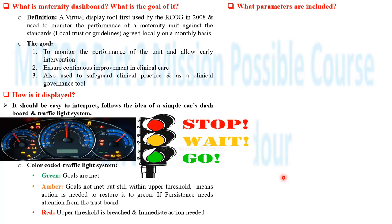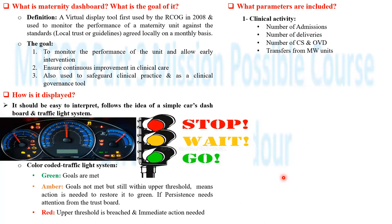The third question: what are the parameters included in the maternity dashboard? There are four major parameters. The first parameter is the clinical activity of the maternity unit — for example, the number of bookings or admissions, the number of deliveries, the number of caesarean sections and operative vaginal deliveries, and the number of transfers from the midwifery unit. These are determined according to the services provided by the unit, so they differ from one unit to another.